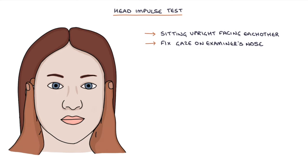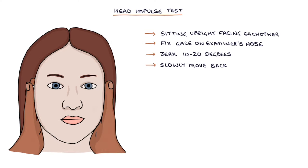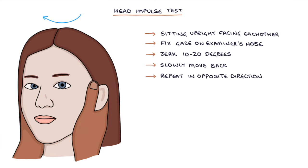Then the examiner holds the patient's head and rapidly jerks it 10 to 20 degrees in one direction while the patient continues looking at the examiner's nose. The head is slowly moved back to the center before repeating the jerk in the opposite direction, again 10 to 20 degrees.